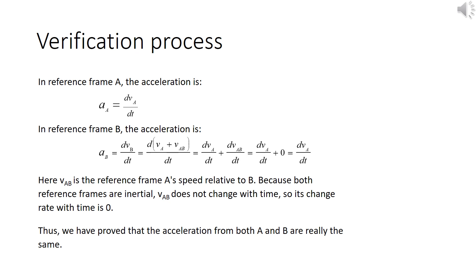So here, v_ab is the reference frame a's speed relative to b. Because both reference frames are inertial, velocity ab does not change with time, so its change rate with time is zero. Thus, we have proved that the acceleration from both a and b are really the same.